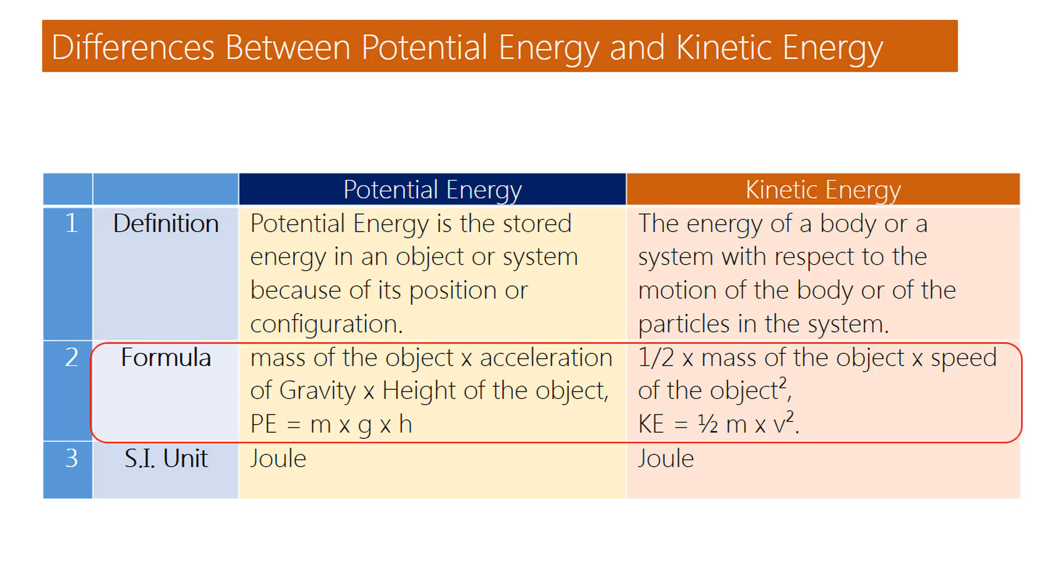Formula of Potential Energy: Mass of the object into acceleration of gravity into height of the object. PE is equal to m into g into h.